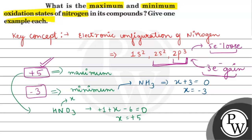So this is the maximum and minimum oxidation state of nitrogen with their respective examples. Hope you understood it well. Best of luck.